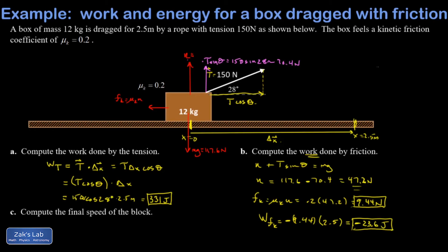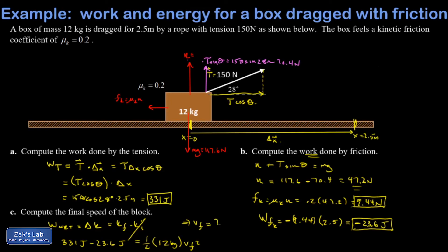The classic final question: find the final speed of the block. Net work equals change in kinetic energy. We're assuming the block starts from rest. Net work is 331 joules minus 23.6 joules — friction made things a bit slower than they would have otherwise — equals one-half times 12 kilograms times VF squared. Solving: take 331 minus 23.6, multiply by 2, divide by 12 to isolate VF squared, then take the square root. VF equals 7.16 meters per second.